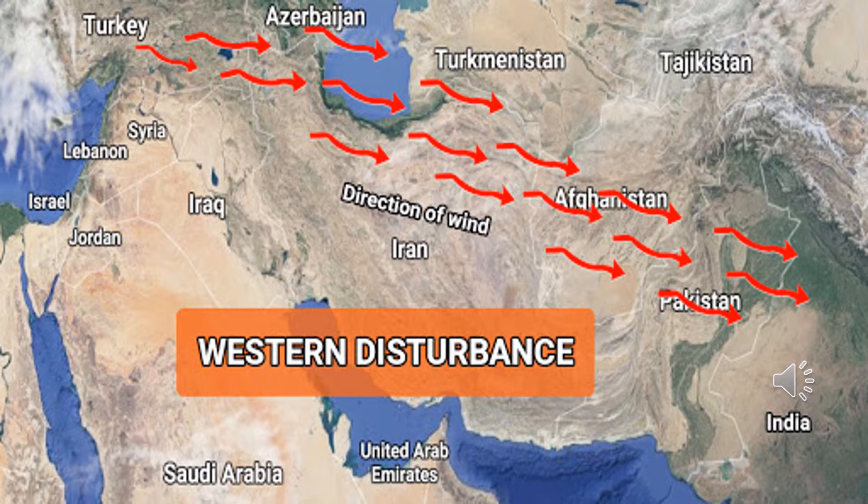Precipitation at higher altitudes is in the form of snowfall, while at relatively lower altitudes it is in the form of rainfall. After hitting the mountains, the winds tend to move towards the south. Before entering Pakistan, these winds have covered a huge area of land — coming from Iran, Afghanistan, and other countries — so they have lost most of their moisture. That is why they cause rainfall, but not a large amount. Most of the precipitation occurs in the northern, northwestern parts, and the Quetta region of Balochistan.